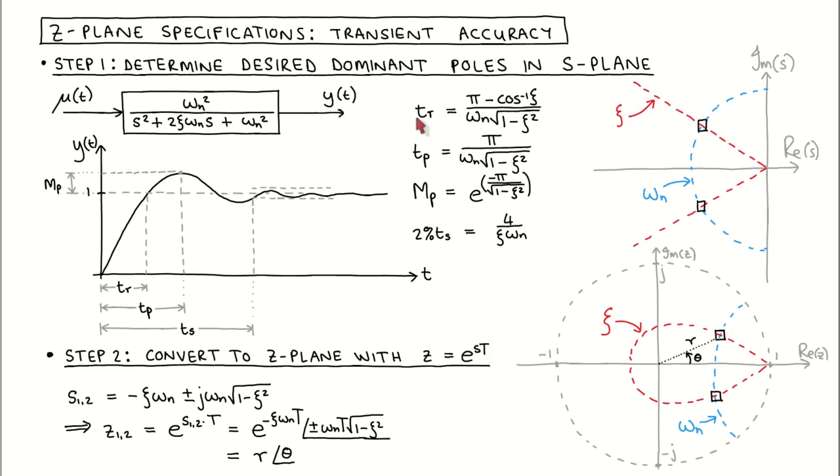The peak time as shown here, the overshoot as shown here, and the 2% settling time as shown here. By specifying two of these transient response parameters, we can calculate the damping and natural frequency, which specifies the desired dominant poles.